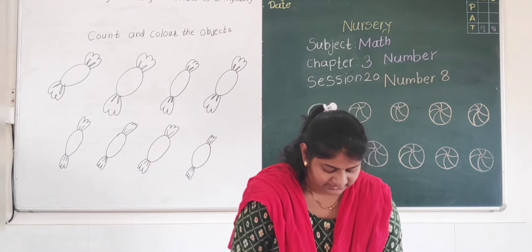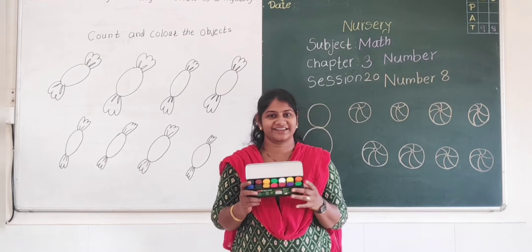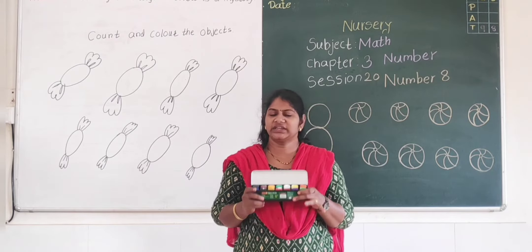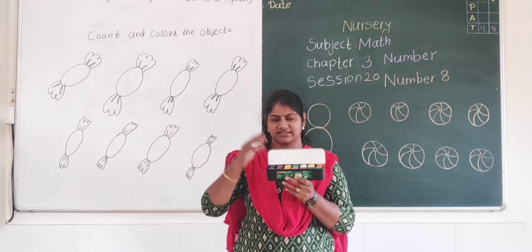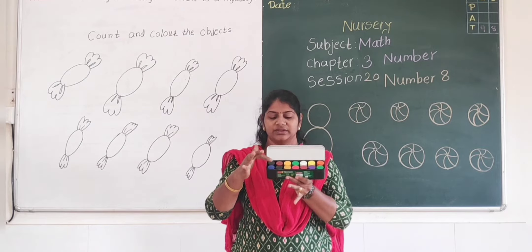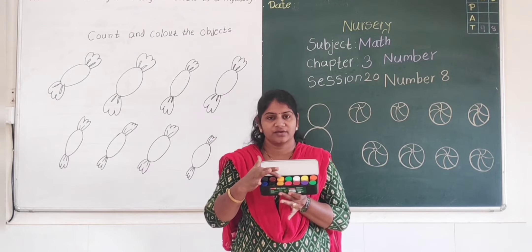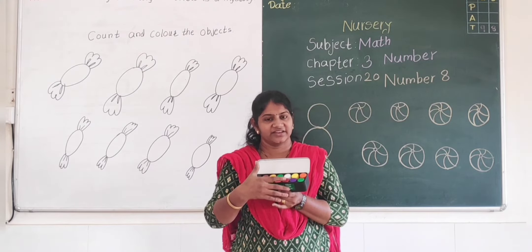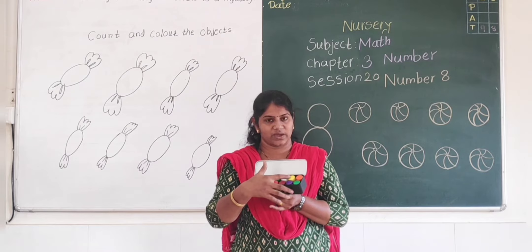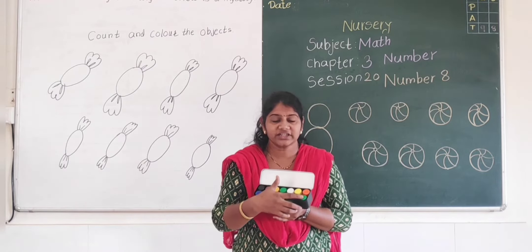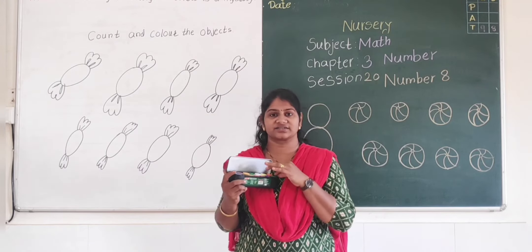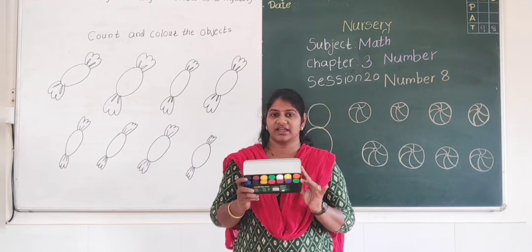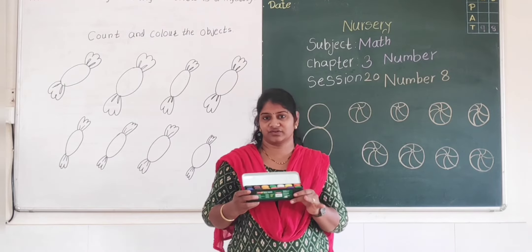Now, these are watercolors. I want only 8 watercolors. How many are there? Let's count: 1, 2, 3, 4, 5, 6, 7, 8, 9, 10, 11, 12, 13, 14. 14 watercolors in this box. But I want only 8. Now I am going to take 8 watercolors.